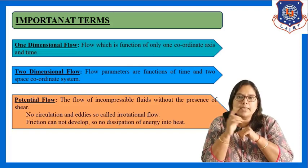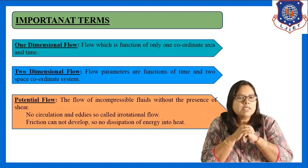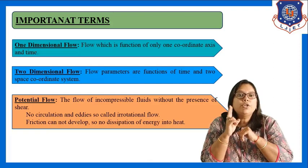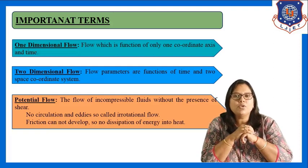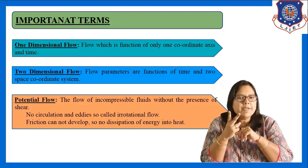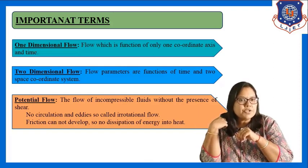The second definition is two-dimensional flow. Flow parameters are a function of two space coordinates and time — that type of flow is known as two-dimensional flow. When flow is a function of two space coordinates and time, it is known as two-dimensional flow.